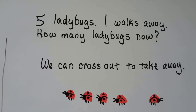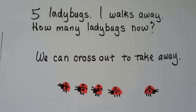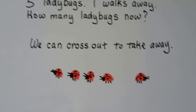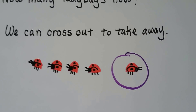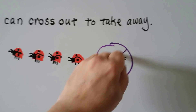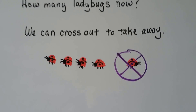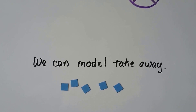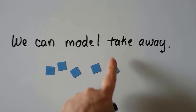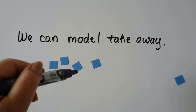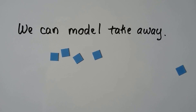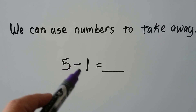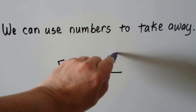Five ladybugs. One walks away. How many ladybugs now? We can cross out to take away. There are five ladybugs: one, two, three, four, five. One walks away — we circle it and cross it out because now it's gone. How many are left? One, two, three, four ladybugs. We can also use models: pretend these are five ladybugs and one walks away, leaving one, two, three, four ladybugs. And we can use numbers: five minus one leaves four ladybugs.